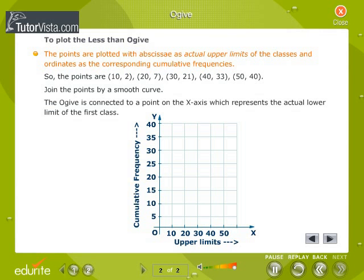The points are plotted with abscissae as actual upper limits of the classes and ordinates as the corresponding cumulative frequencies. So the points are (10,2), (20,7), (30,21), (40,33), (50,40).